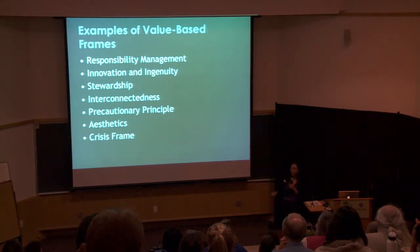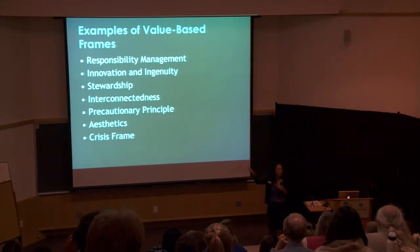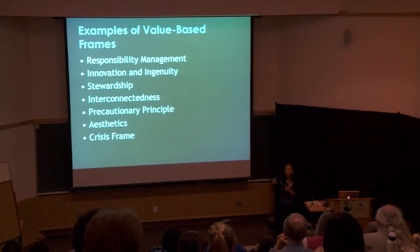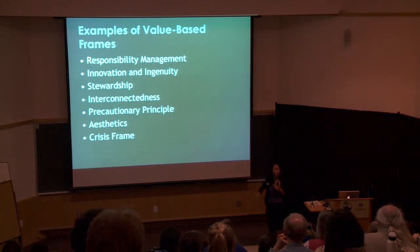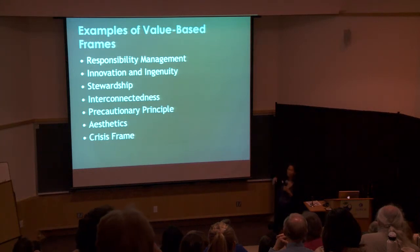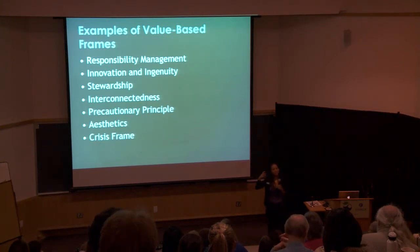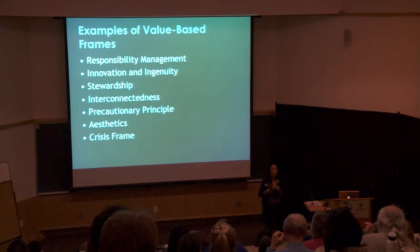Three lesser frames we discuss in our trainings are the precautionary principle, aesthetics, and the crisis frame. The precautionary principle basically says we can't afford not to do something — like buying insurance: you invest a little all the time just in case something big happens. Aesthetics is one we rely on because we have a beautiful live collection, but it's an emotional frame so you have to be careful. People think different things are pretty — maybe someone doesn't want to save the naked mole rat because it's an ugly animal, but it's still a valuable one.